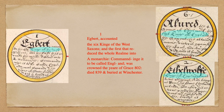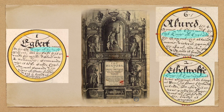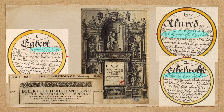Aethelwulf, Egbert's son, became the first crowned king of England from the start of his reign, whereas Egbert obtained the monarchy through conquest and named it England. A book printed in 1623 by John Speed, The History of Great Britain, confirms this — Egbert was the 18th king of the West Saxons, the 19th but first sole and absolute monarch of the Englishmen. In other words, he was the first king of England.